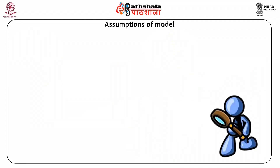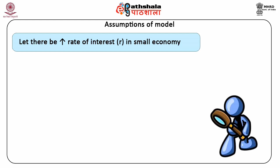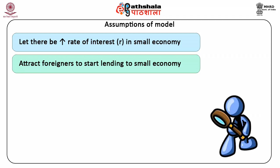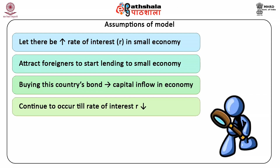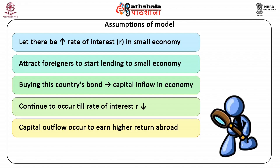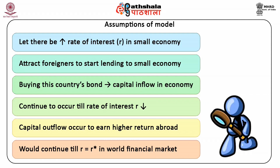4. It works in the following fashion. Let there be a rise in the rate of interest R in the small economy due to some event. It would attract foreigners to start lending to this economy, for example by buying this country's bonds. This will lead to capital inflow, which would continue to occur until the rate of interest R reduces. Then capital outflow would occur to earn a higher return abroad. This would continue until R is equal to R star.